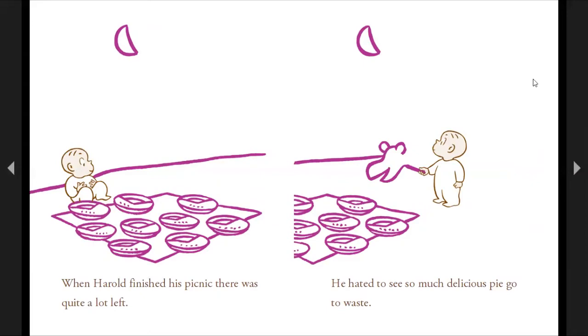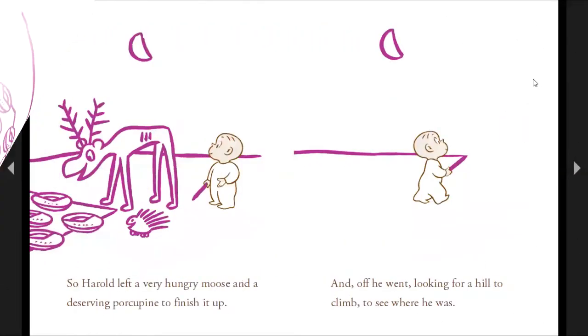When Harold finished his picnic, there was quite a lot left. He hated to see so much delicious pie go to waste. So Harold left a very hungry mouse and a deserving porcupine to finish it up. And off he went looking for a hill to climb to see where he was.